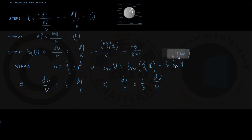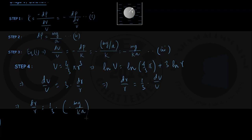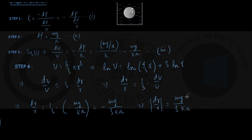Using equation three, ΔR/R equals one-third of ΔV/V. We already found ΔV/V equals minus mg upon KA. Substituting gives ΔR/R equals minus mg upon three KA — the fractional change in radius. The question asks for the fractional decrement in radius, so we take the absolute value of ΔR/R, which gives mg upon 3KA — a positive value. This matches option three given in the question, so our answer is option three.